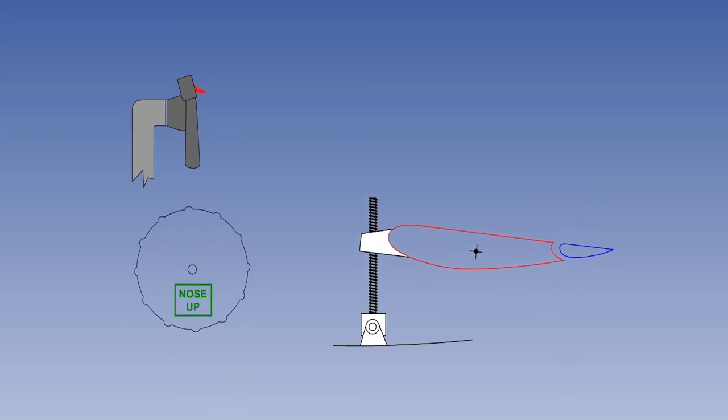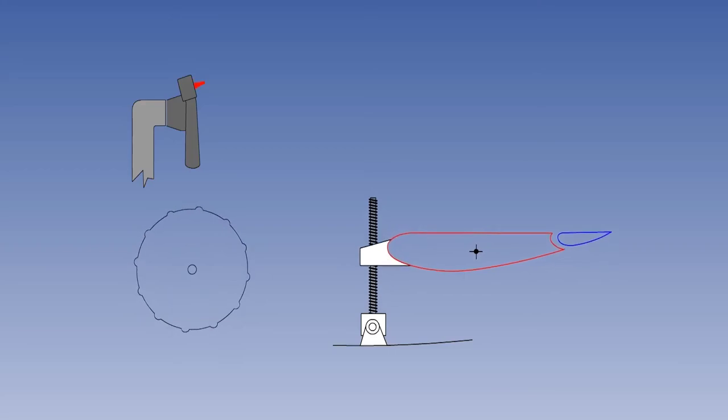However, there is a drawback associated with the increased power of the variable incidence trimming tailplane. If the tailplane were to change its incidence without being commanded, the pilot could not stop the aircraft from pitching out of control because the elevator is much smaller than the tailplane. This is known as stabilizer trim runaway and safeguards have to be incorporated in the design to prevent it.